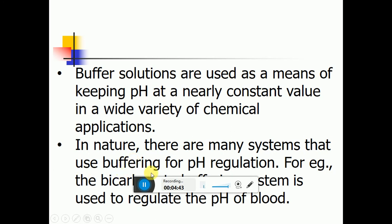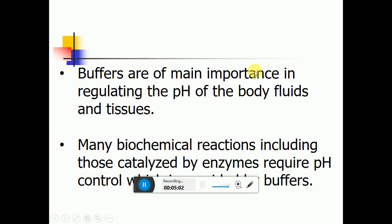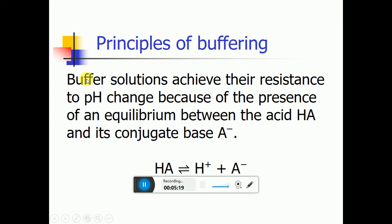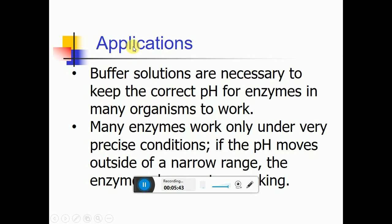In nature, there are many systems that use buffers. For example, the bicarbonate buffer system, in which carbonic acid and bicarbonate are present in blood plasma, maintaining a pH between 7.35 and 7.45. Industrially, buffer solutions are used in fermentation processes and in setting the correct conditions for dyes used in coloring fabrics. They are also used in chemical analysis with pH meters.